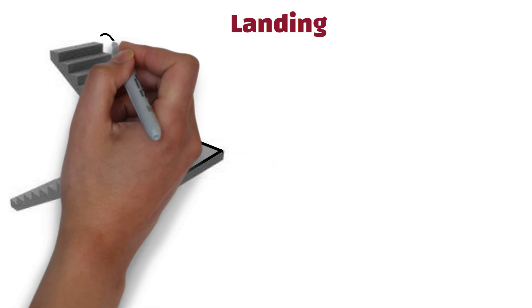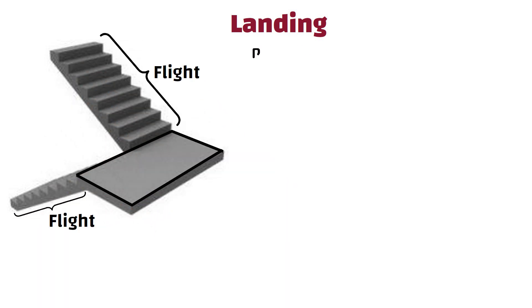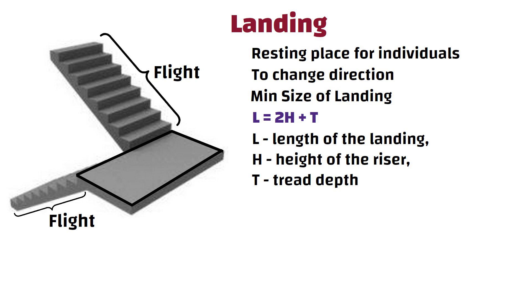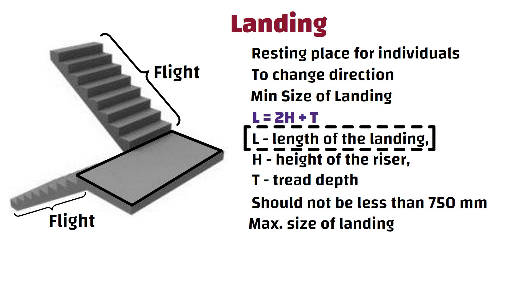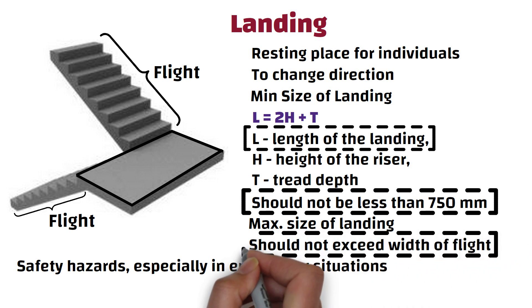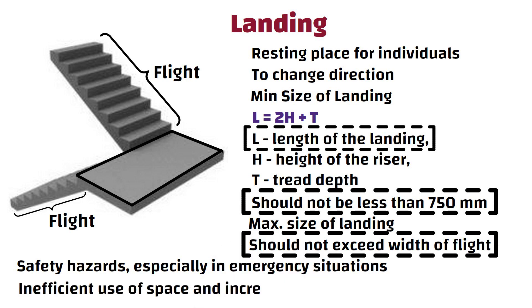4. Landing. Landing refers to a flat platform or area that is provided between two flights of stairs. The purpose of landing is to provide a resting place for individuals and also to change direction. As per national building code, the minimum size of landing in a staircase is typically determined by the formula L equals 2H plus T, where L is the length of landing, H is the height of riser, and T is the tread depth. The minimum length of landing should not be less than 750 mm. Usually, the maximum size of landing should not exceed the width of flight of stairs. If the size of landing is kept smaller than the standard size, it may lead to safety hazards, especially in emergency situations. Conversely, if the landing size is larger than the standard size, it may result in insufficient use of space and increased construction cost.